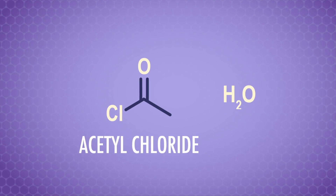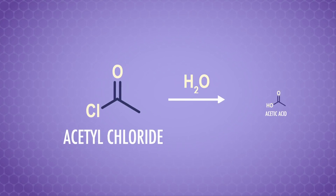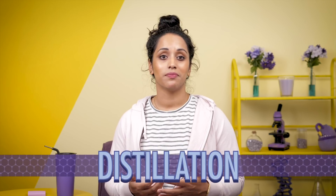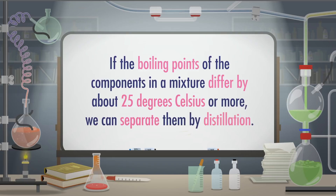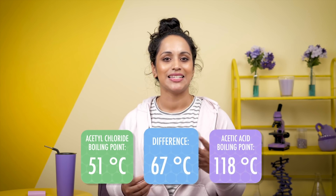The air contains water vapor, and acid chloride undergoes hydrolysis with water. So the acetyl chloride is likely contaminated with acetic acid and hydrochloric acid, and they'd need to purify it before doing anything else. The acid chloride would be really difficult to purify using flash chromatography because it's so reactive. But both of these compounds are liquids, so instead of using flash chromatography and polarity, we can use a method called distillation. If the boiling points of the components in a mixture differ by about 25 degrees Celsius or more, we can separate them by distillation. The boiling point of acetyl chloride is 51°C, and acetic acid's boiling point is 118°C — a nice 67-degree difference.